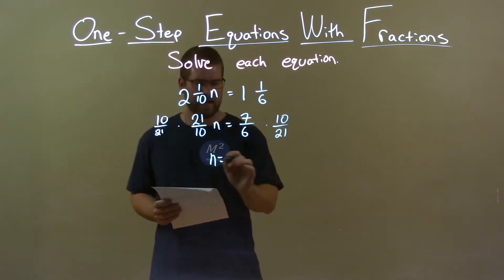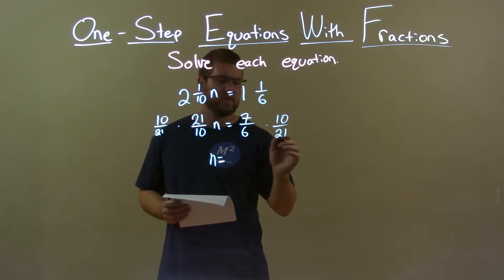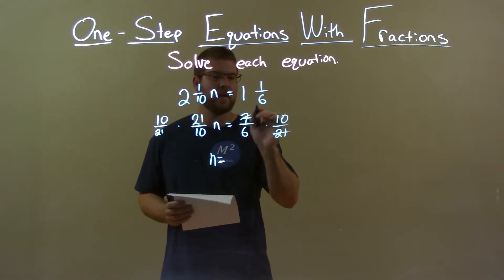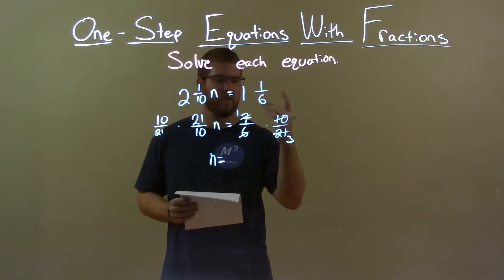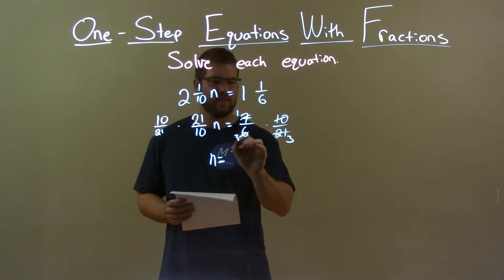Then on the right-hand side, we can simplify some of this stuff as much as we can. 21 and 7 simplify, right? There's a 1 and this is a 3, and then 6 and a 10, but there's a 2. So we have 3 and a 5.